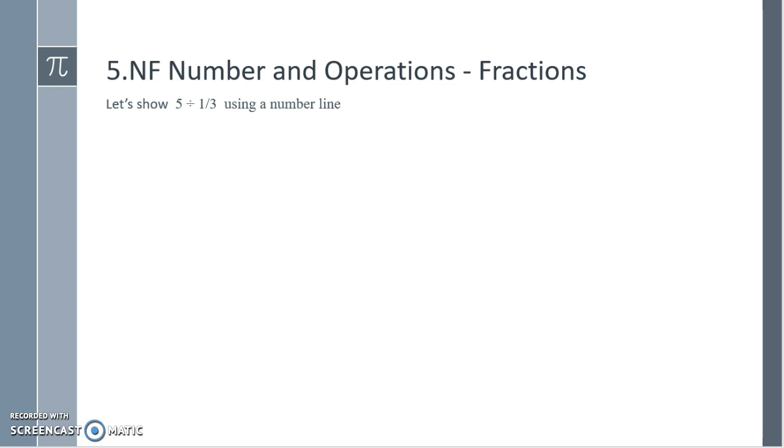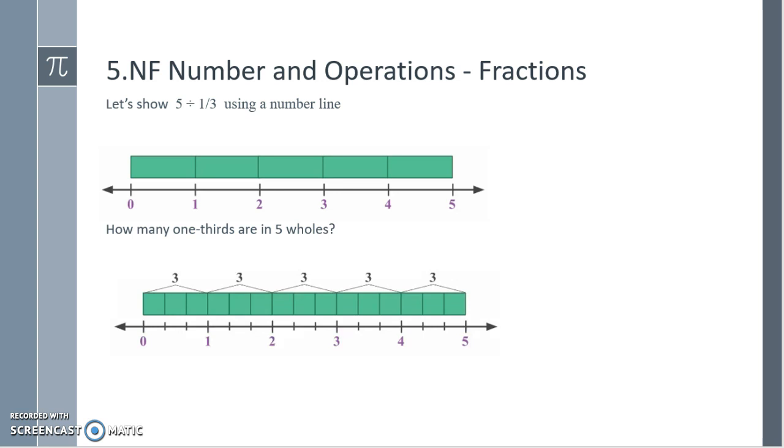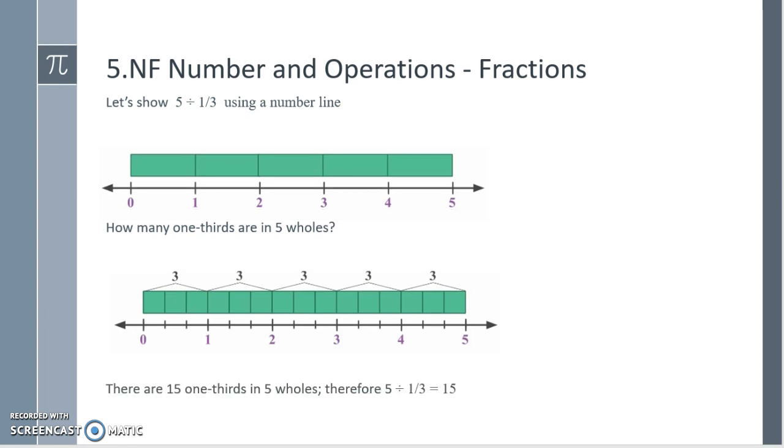Let's show the reverse: 5 divided by 1 third using a number line. Here I have 5 units on a number line. I want to ask how many 1 thirds are in 5 wholes. So we cut each whole into thirds. I see that it takes 15 1 thirds to make 5 wholes. So there are 15 1 thirds in 5 wholes. Therefore, 5 divided by 1 third is 15.